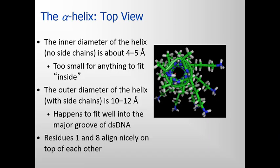Some facts pertaining to an alpha helix: the inner diameter of the helix without the side chains is about 4 to 5 angstroms — an angstrom is 10 to the minus 10 meters — very small, too small to fit anything inside. The outer diameter with side chains is about 10 to 12 angstroms, and this happens to fit really well into the major groove of double-stranded DNA. Now, where does double-stranded DNA come into picture?